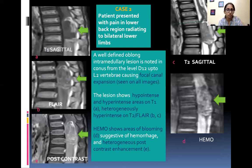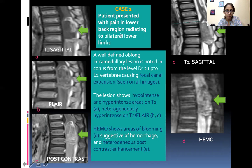Presenting a case of hemangioblastoma: patient presented with pain in the lower back region radiating to bilateral lower limbs. A well-defined oblong intramedullary lesion is noted in the conus from D12 to L2 vertebral level causing focal expansion. The lesion shows hyper intense signal on T1 and T2 weighted images and is heterogeneously hyper intense on FLAIR. On hemosiderin sequence, areas of blooming suggest hemorrhage, and the lesion shows heterogeneous post-contrast enhancement.